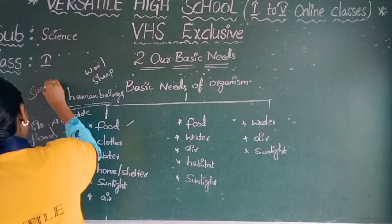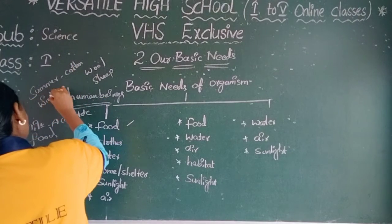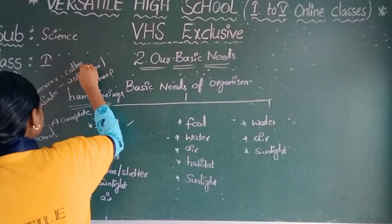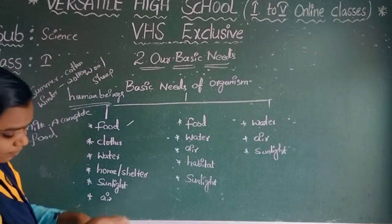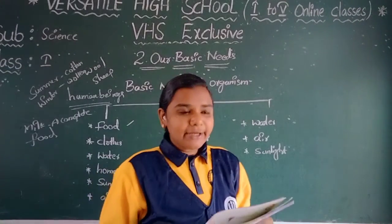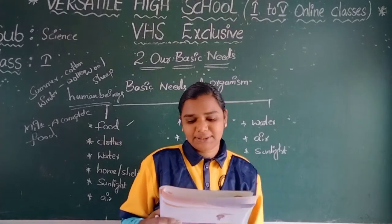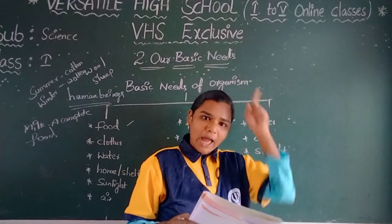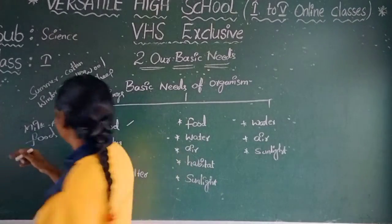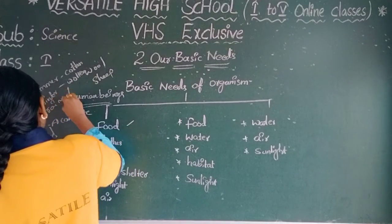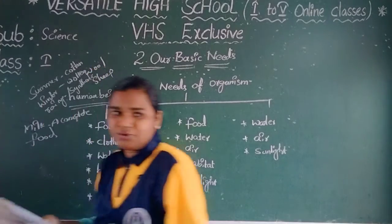So in summer we wear cotton clothes, and in winter we wear woolen clothes. Cotton clothes keep our body cool and woolen clothes give warmth. When going out in the rain, we wear raincoats and gumboots, and we also carry an umbrella. Raincoats are made of synthetic material, which dries up quickly.